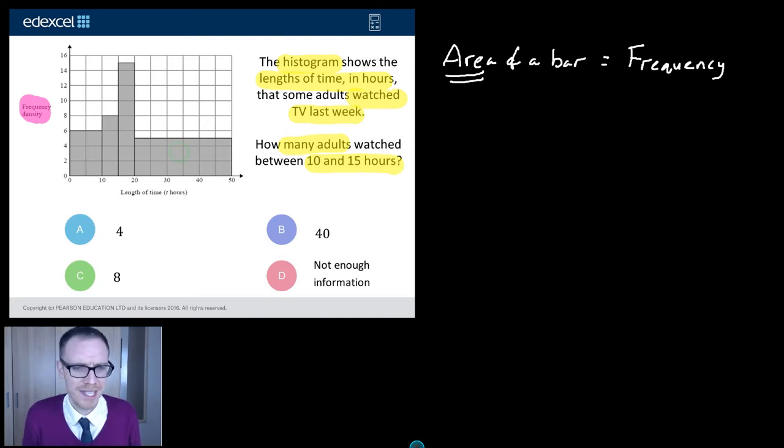How many adults watch between 10 and 15 hours? So that's that group there. So all we need to do is work out the area of that bar. So let me do a quick sketch of the bar here. So there's my bar. And what's my base of the bar? Well, it goes from 10 to 15. So I reckon that's got a base of 5. What's my height of the bar? Well, I can see it there marked on my axis. It's got a height of 8. And to get the area, I need to do 5 times 8. And last time I checked that, the answer was 40.